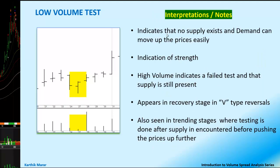The interpretation: it indicates that no supply exists and demand can move up the price easily. It is an indication of strength. But if we see high volume, it is a failed test and indicates that supply is still present. It appears in the recovery stage of a V-type reversal, and is also seen in trending stages where testing is done after supply is encountered before pushing prices further up.